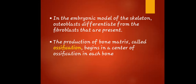In the embryonic model of the skeleton, osteoblasts differentiate from the fibroblasts that are present. The production of bone matrix is called ossification. Ossification begins in the center of each bone.